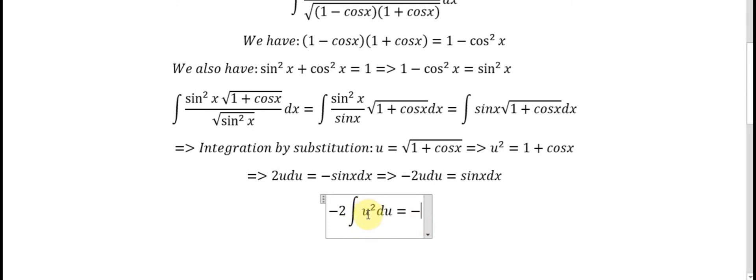This becomes the integral of 2u squared du, which equals 2 times u cubed divided by 3 plus C. Now this u returns back to the square root of 1 plus cosine s.